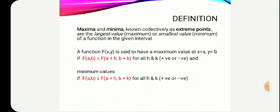Similarly, the function has a minimum value if f(a, b) is less than or equal to f(a+h, b+k) for all h and k. This means the function value at (a, b) will be the minimum, and the rest of the function values will be greater than or equal to f(a+h, b+k).